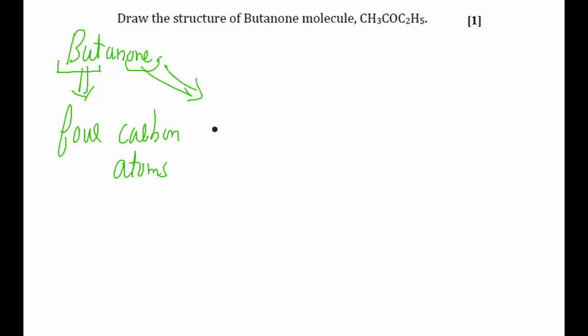So there will be four carbon atoms. Let's draw a straight chain of four carbon atoms. Now I know that the valency of carbon is four, so each carbon atom will be bonded to four bonds.